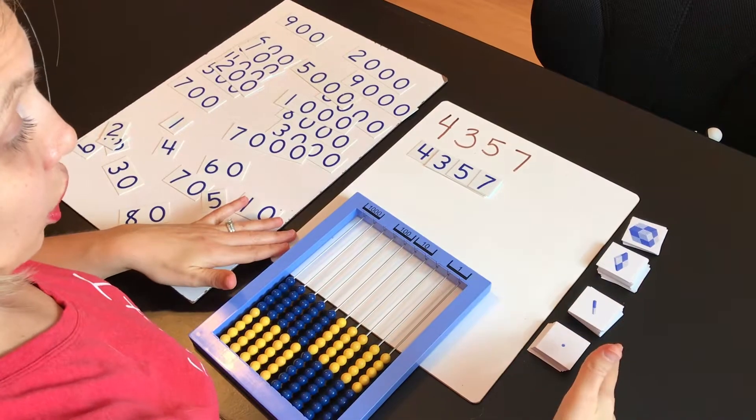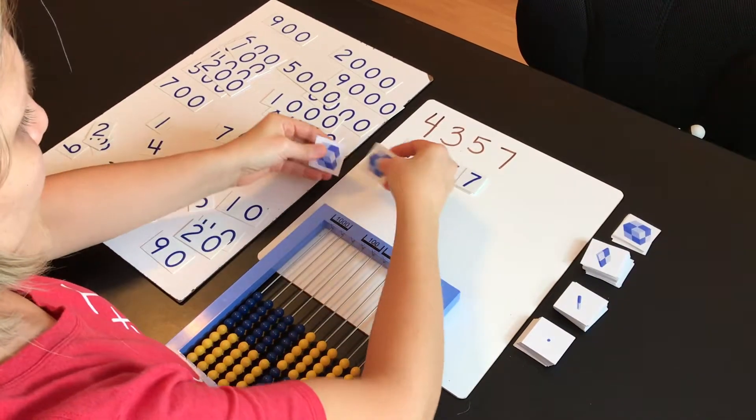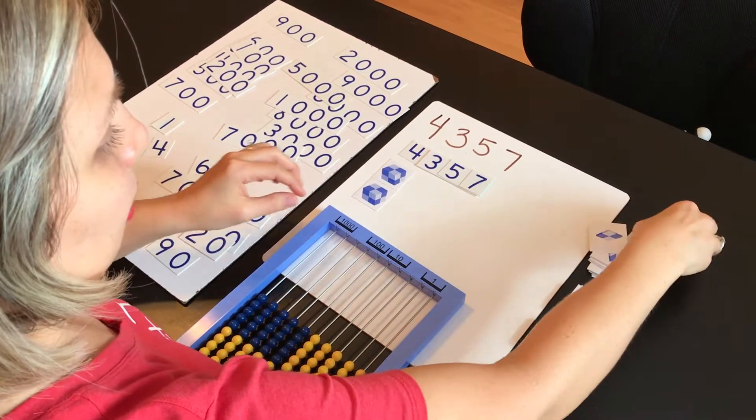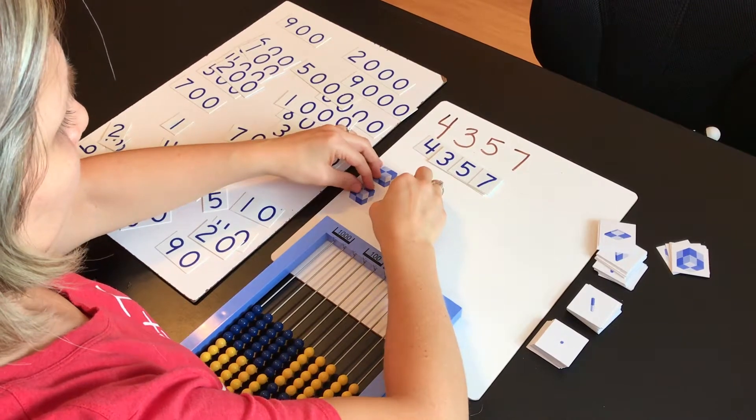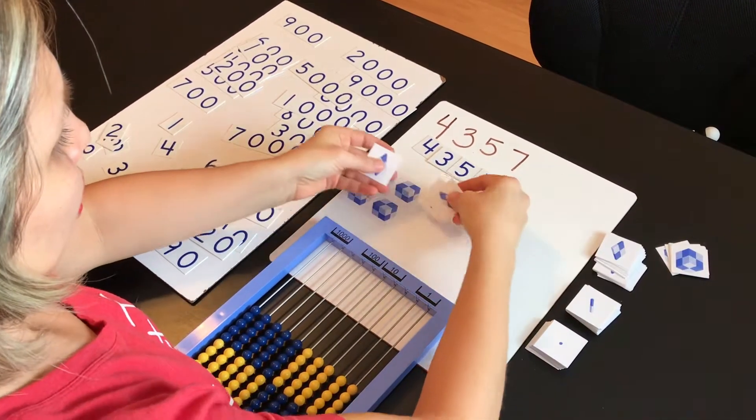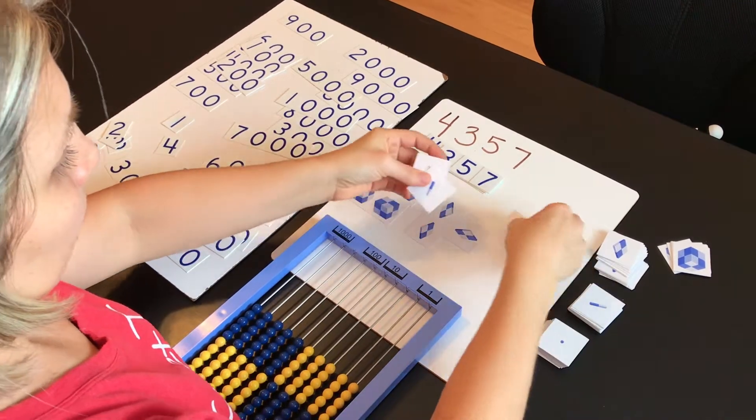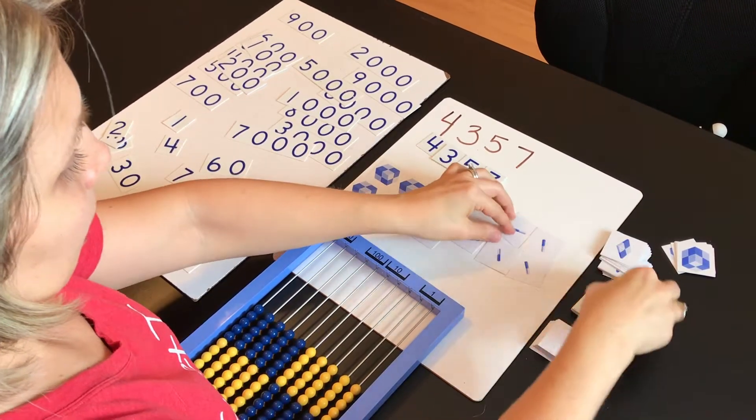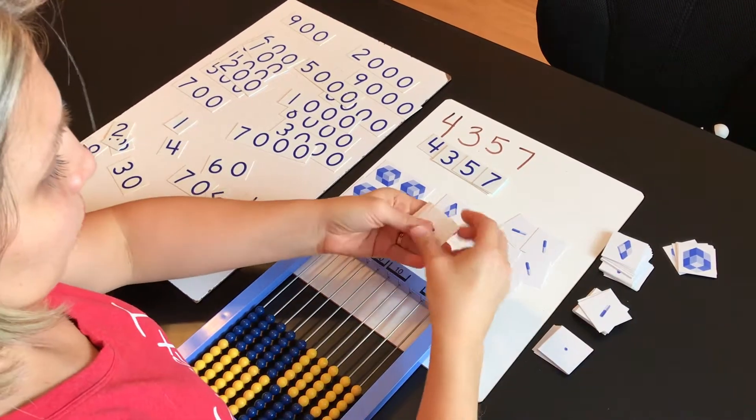Then she could come over here to her base 10 cards, and she would get out four blocks of the thousands, four thousand, three hundred, fifty, and then she got seven singles.